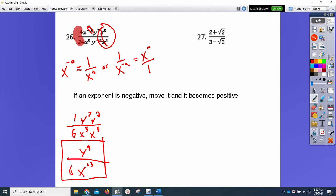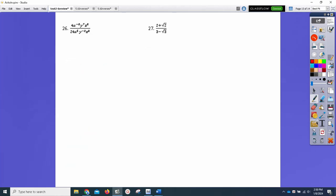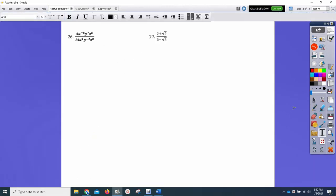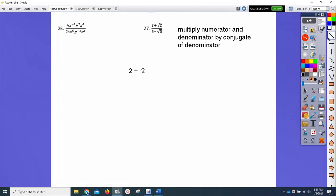Alright, what's up with 27? 27 is going to use the conjugate idea. The idea in 27 is simply multiply the numerator and denominator by the conjugate of the denominator. I'll take some extra time and type this out, or at least the setup so you can see the setup.